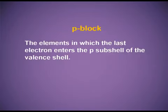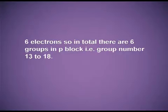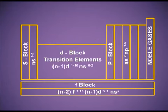The P block elements are those in which the last electron enters the P subshell of their valence shell. Since the P orbital can accommodate six electrons, there are six groups in the P block, from group number 13 to 18. The electronic configuration of P block elements is ns², np¹⁻⁶. The S block and P block together are known as the main block elements or representative elements.